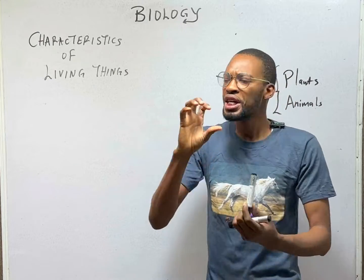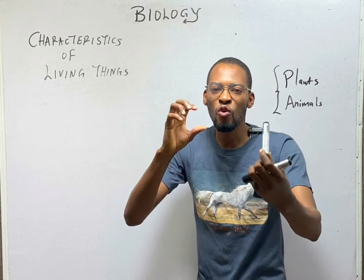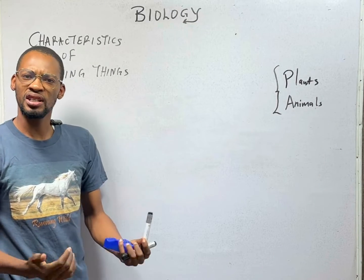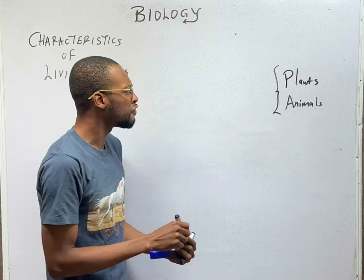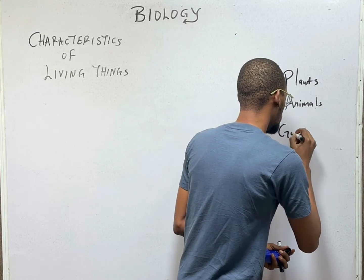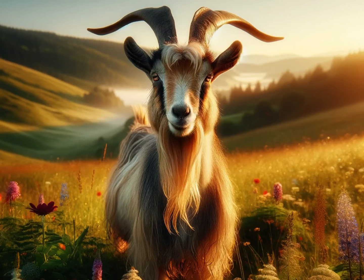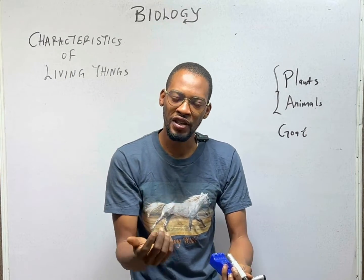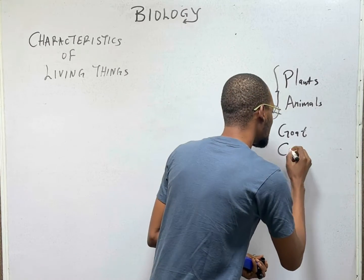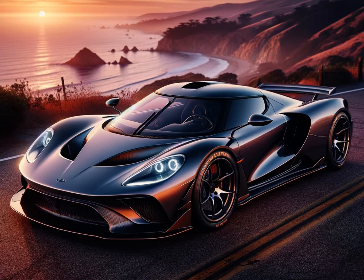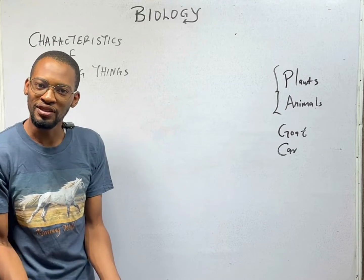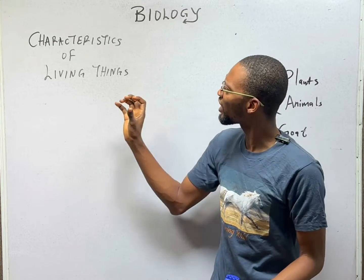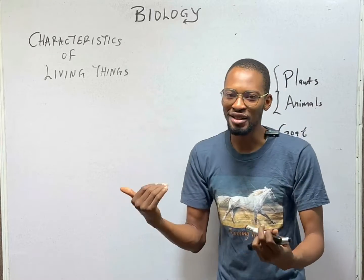A question comes to mind: if biology is the study of living things, what are living things? What are the characters, properties, or behaviors that we see and say, oh, this is a living thing? An example of a living thing is goats. What are the proofs that goats are living things? Why is a goat living but a car is not? Despite the fact that they both move — goats can move, cars can move — so why is one a living thing and the other is not? This is why we need to discuss the characteristics of living things, the features that make living things.